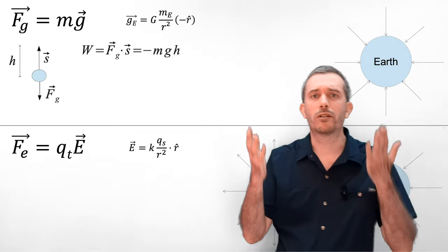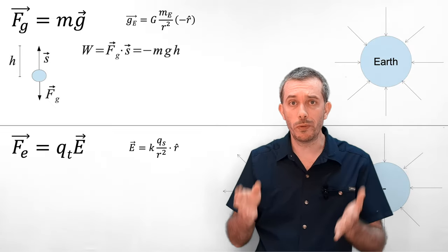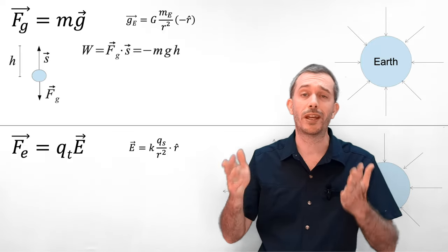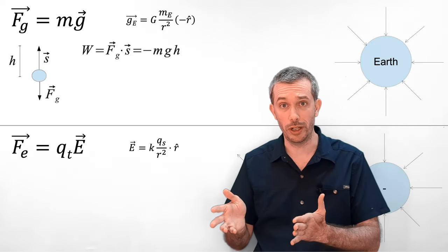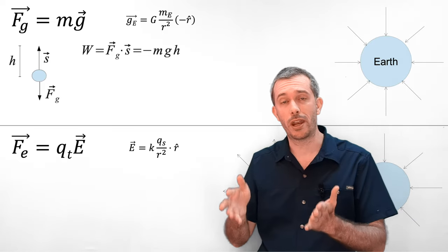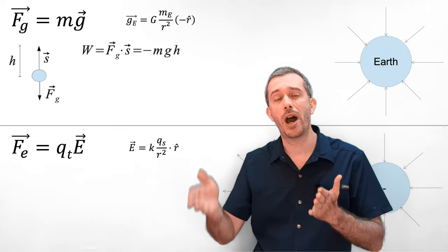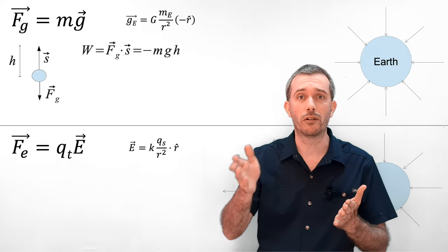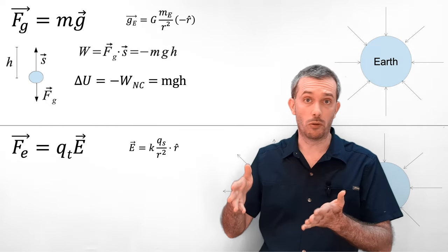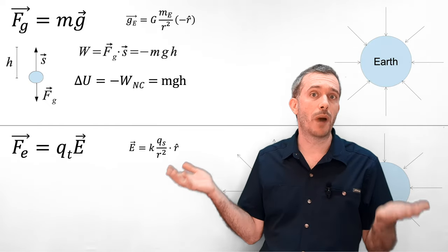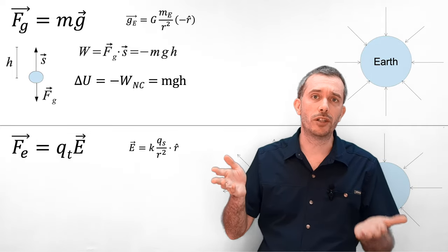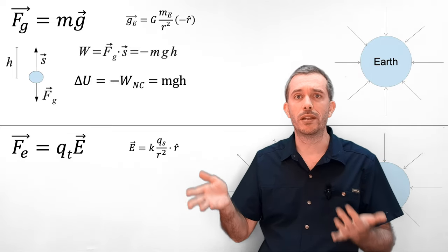Now because gravity is a conservative force, we were able to introduce the idea of a potential energy, which is defined as: the change of potential energy is minus the work done by the conservative force — in this case gravity. So minus minus mgh gave us the change of potential energy due to gravity is mgh.